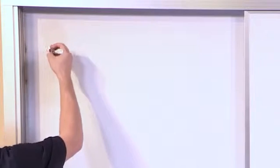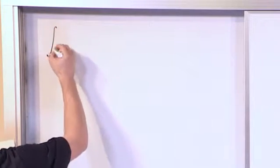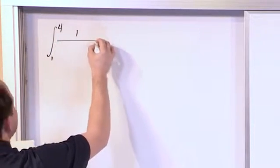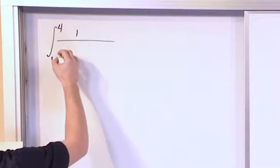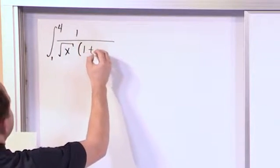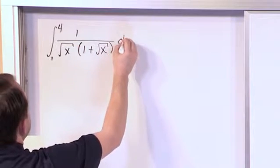Let's go ahead and do a definite integral. In this case, let's do an integral from 1 to 4 of the following nasty looking quantity: 1 over square root of x times 1 plus the square root of x, dx.